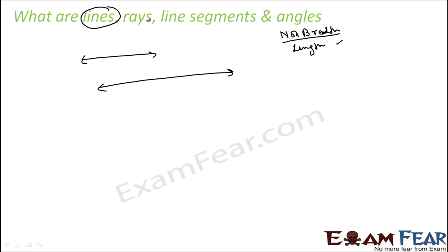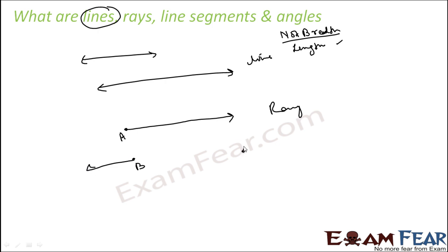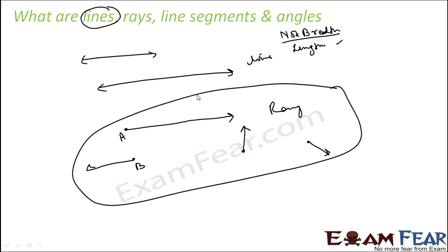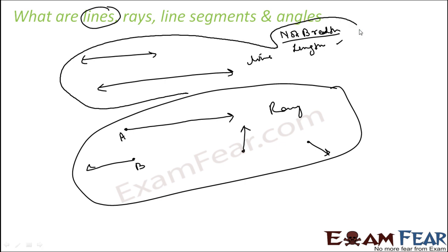So if you take the same line and fix it at one point — for example, fix it at point A — and then extend in the right direction, this is a ray. You can also extend in different directions from a fixed point. All of these are rays. If you fix both ends, you get a line segment. For example, fix these two ends and call them C and D — this is a line segment.